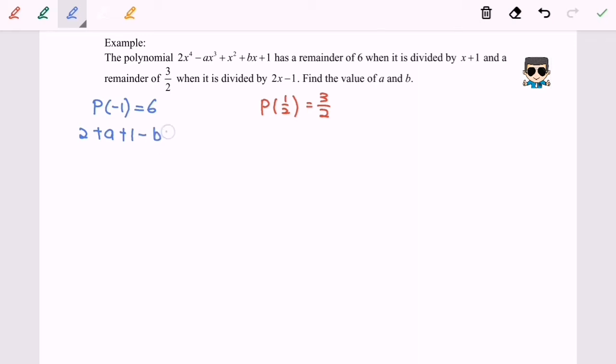So here we will have 4 plus a minus b equals to 6. Simplify the equation and we will have the first equation with a minus b, which equals to 2.